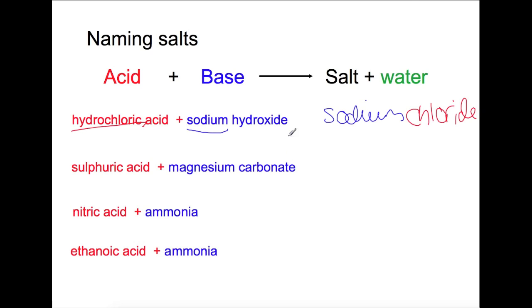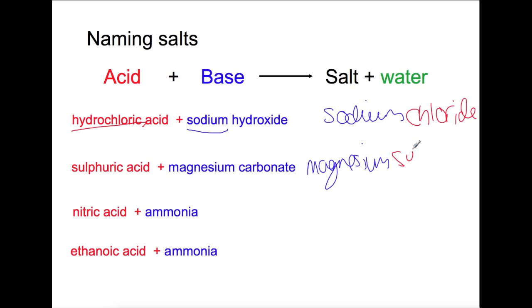Looking at the second example, you have sulfuric acid and magnesium carbonate, so that will produce a magnesium salt and this time it will be a sulfate. This reaction would also produce carbon dioxide.